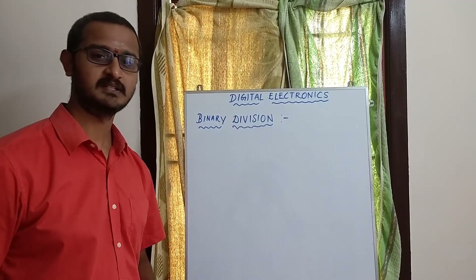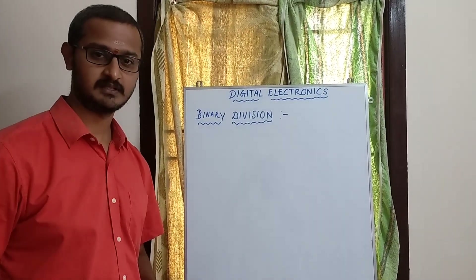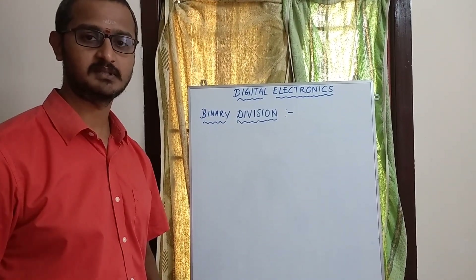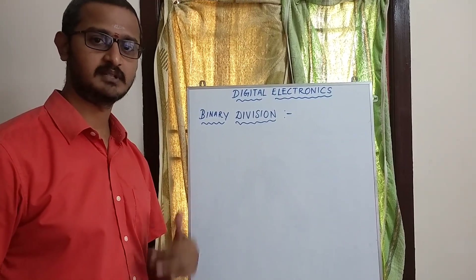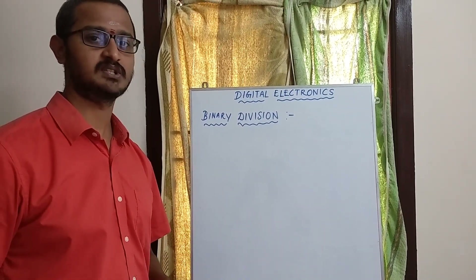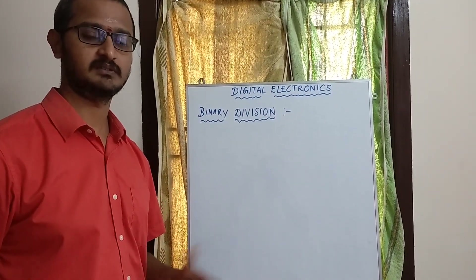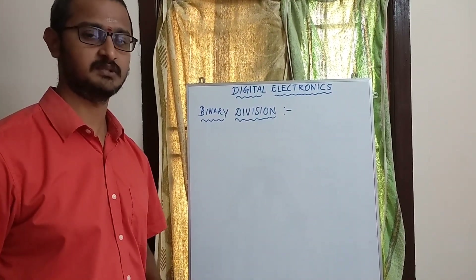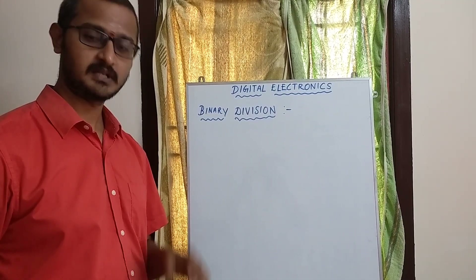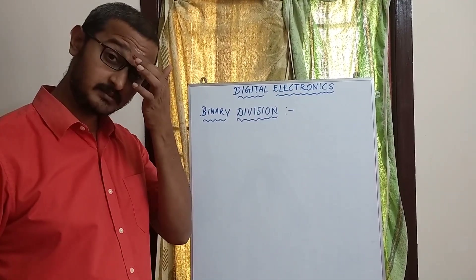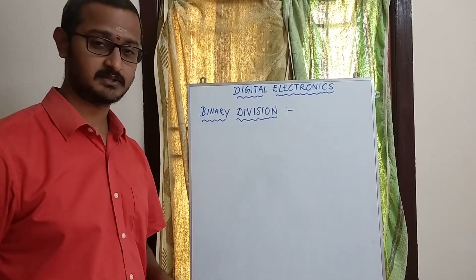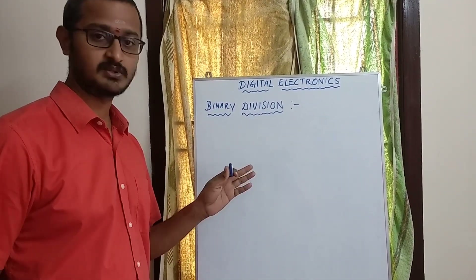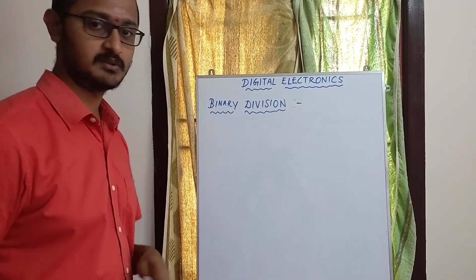Now let's look at binary division. If you look at binary multiplication, you can see repeated addition. Binary division is vice versa — it is repeated subtraction. You can see subtraction in the previous videos. So I will try to solve a suitable example.